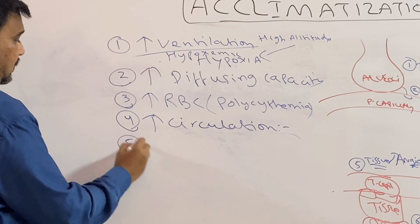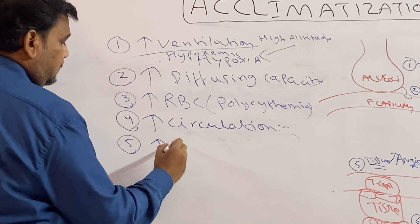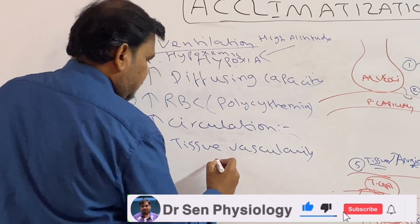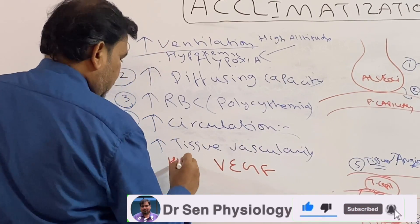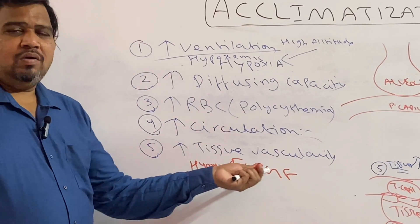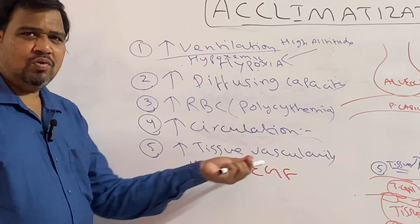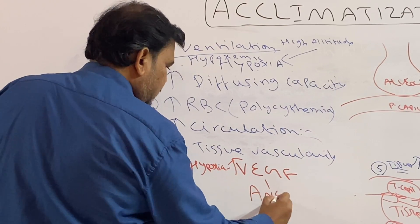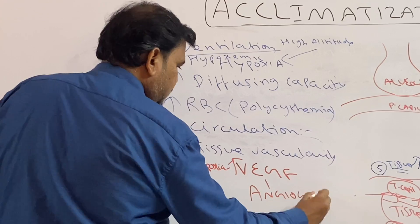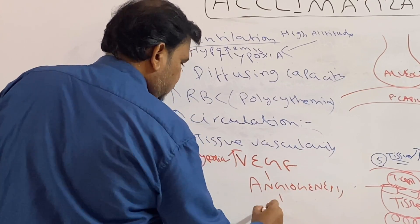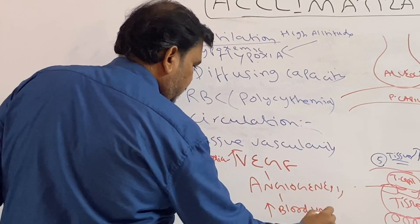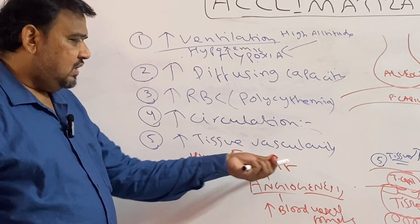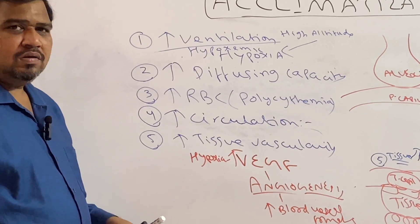The fifth point: at the tissue level, increased tissue vascularity. The reason is that hypoxia increases vascular endothelial growth factor (VEGF). Because of VEGF, there is angiogenesis — increased blood vessel formation, specifically micro blood vessels. This is the mechanism of increased tissue vascularity at the tissue level.